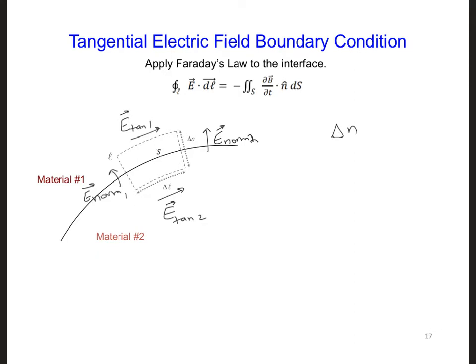So if we take the limit where delta n goes to zero, meaning we're scrunching and squishing this rectangular surface to be infinitesimally wide in the delta n direction, we're basically collapsing it around the material interface, then the contribution of the normal components will also go to zero.